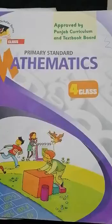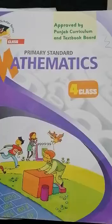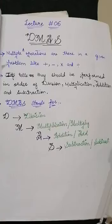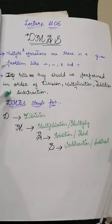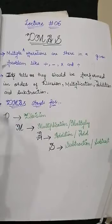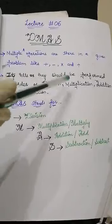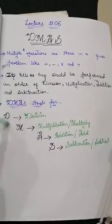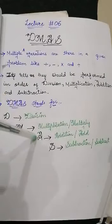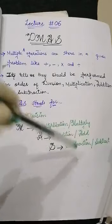You have already solved sums using addition, division, multiplication, and subtraction, but in this topic you will solve all these arithmetic operations in one question. In the DMAS rule, multiple arithmetic operations are involved — plus, minus, multiply, and divide. It tells us they should be performed in order: Division, Multiplication, Addition, and Subtraction. D stands for Division, M stands for Multiplication, A stands for Addition, and S stands for Subtraction.